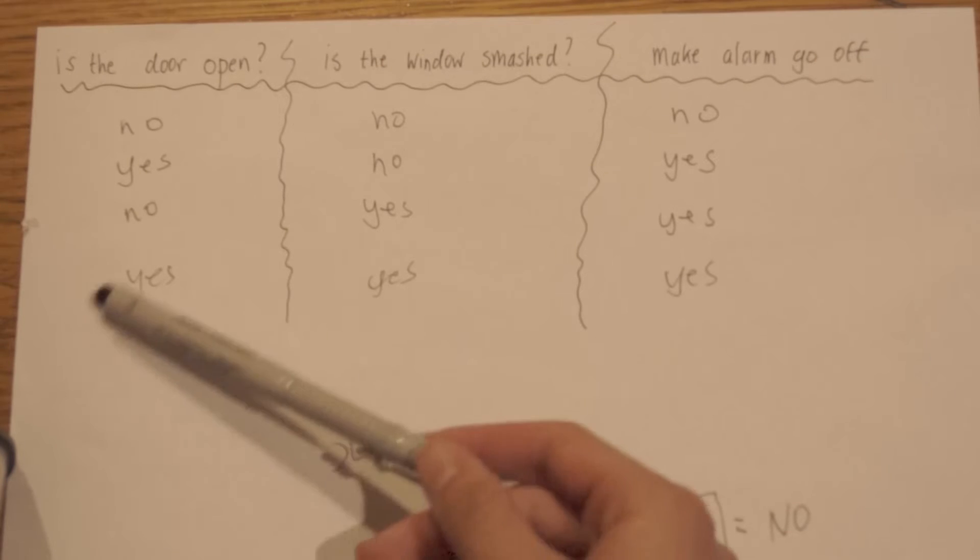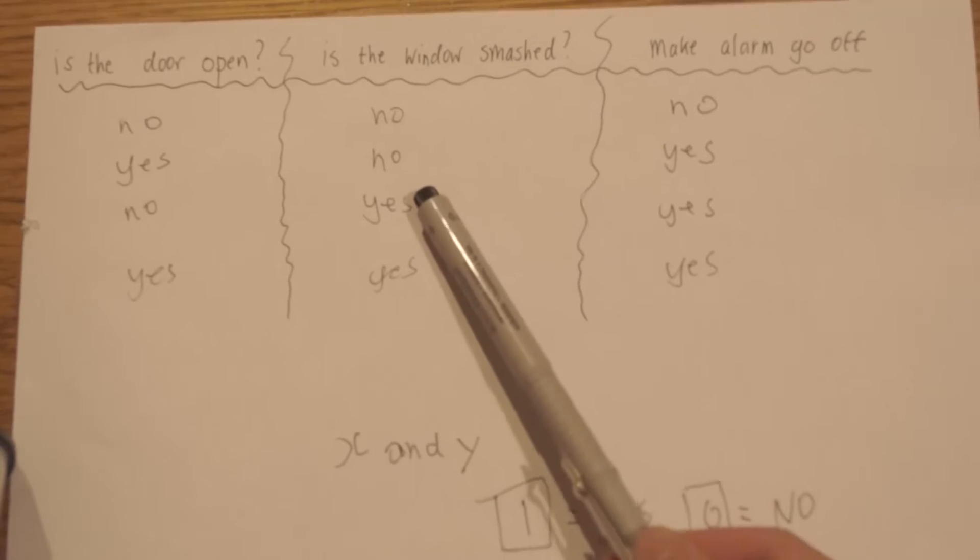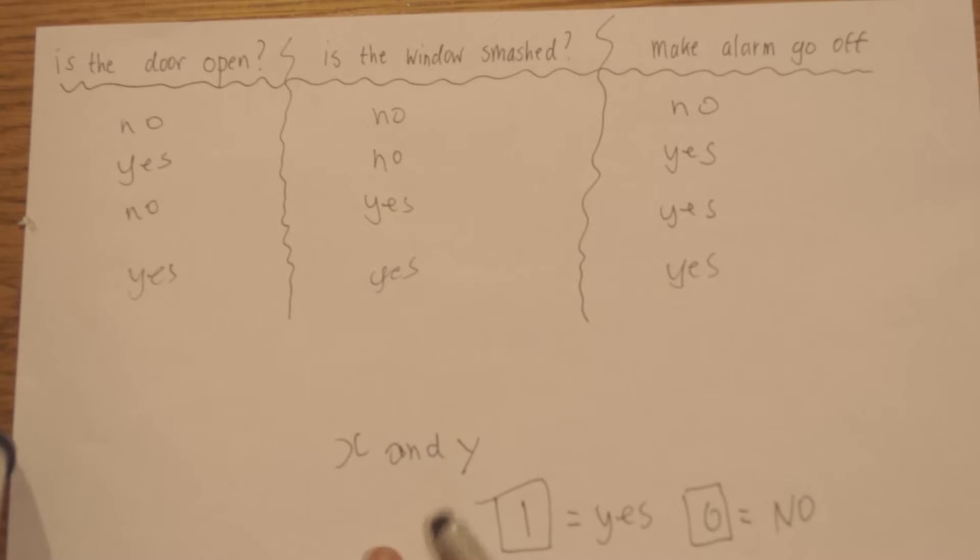So let's see, if the door is open, the burglars are coming from the door, the alarm must be on. But the window is not open, so it'll still go on because we're afraid the burglar comes from the door.